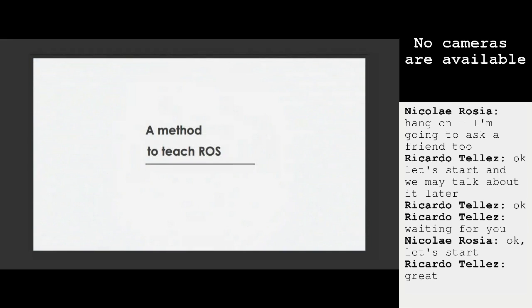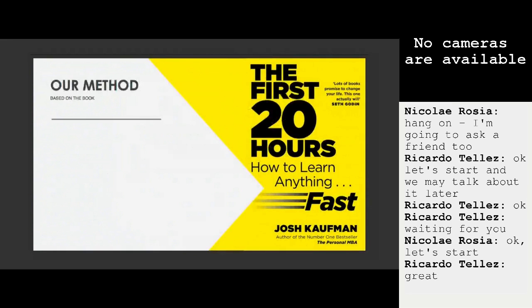Given those reasons why ROS is difficult, we decided to think about how to improve that. We read a lot of materials, did a lot of practice and tests, and finally arrived at a method described in the book 'The First 20 Hours: How to Learn Anything Fast.' We are based on this book — it's nothing that everybody doesn't already know, but it's well-structured and fun to read.